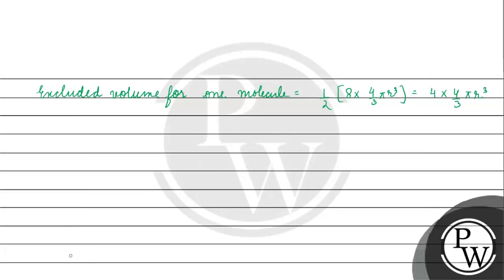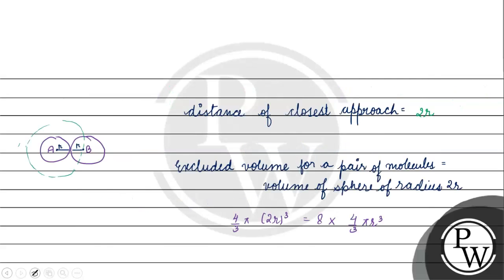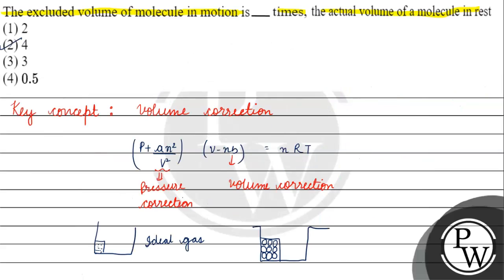Which is equal to 4 into 4/3 π r³. So the excluded volume per molecule equals 4 times the actual volume of one molecule, where the actual volume is 4/3 π r³. So now, if we compare the excluded volume of the gas with the actual volume of the gas, the excluded volume is 4 times the actual volume. This is the answer — the excluded volume of a molecule is 4 times the actual volume of the molecule. I hope you understood it well. Thank you and all the best.